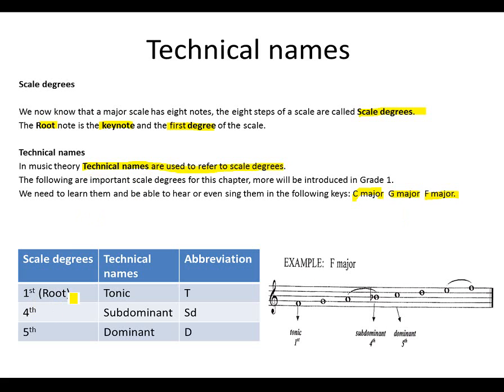The first scale degree is your root. The technical name: tonic. Abbreviation: T. Let's look at it on the F major scale. This is your F. Then this would be your tonic, first degree.